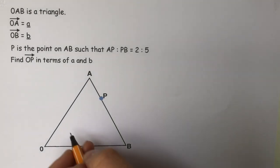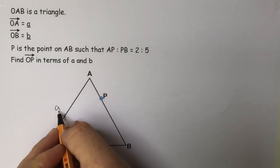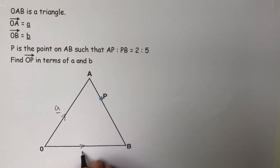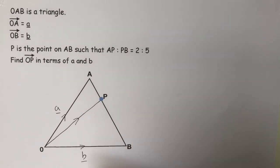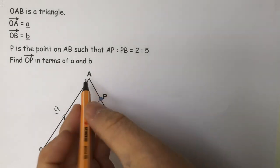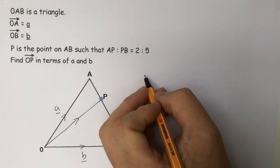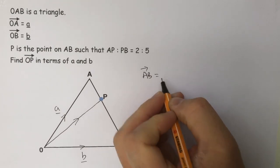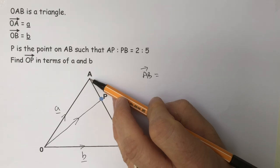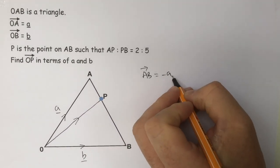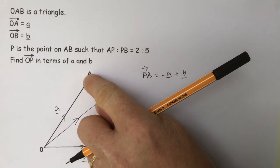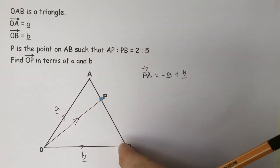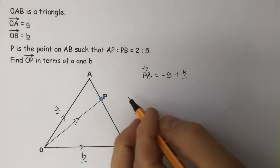Here we have a vector problem. We are told that from O to A is a, and from O to B is b. We are asked to work out the position vector of point P, so we need to find the vector from O to P. We can first work out the vector going from A to B. A to B is the equivalent of going from A to O, which is minus a, followed by O to B, which is b. So A to B equals minus a plus b.